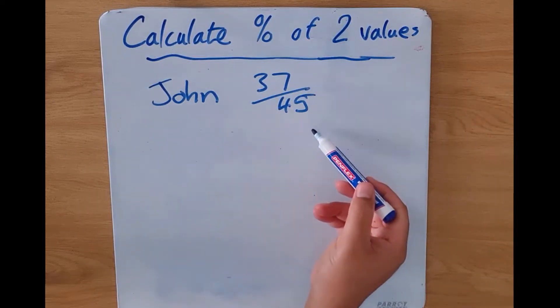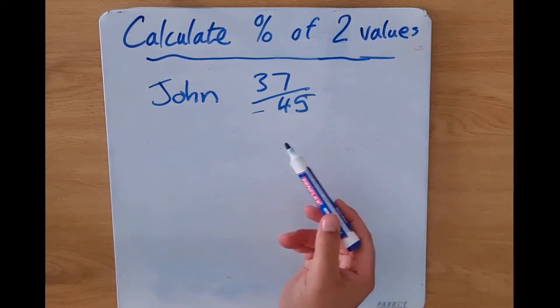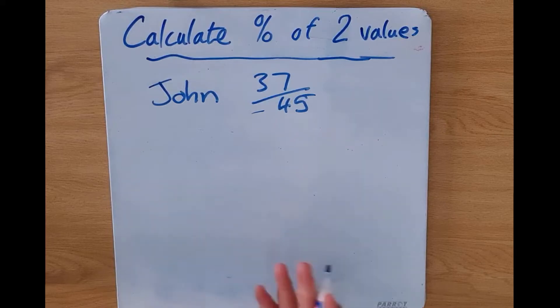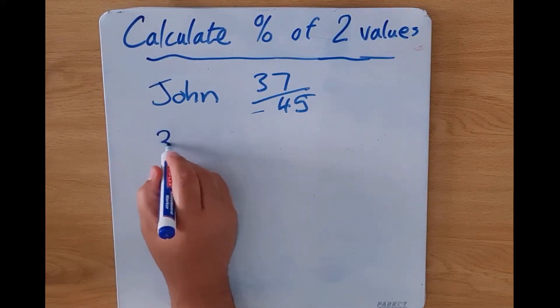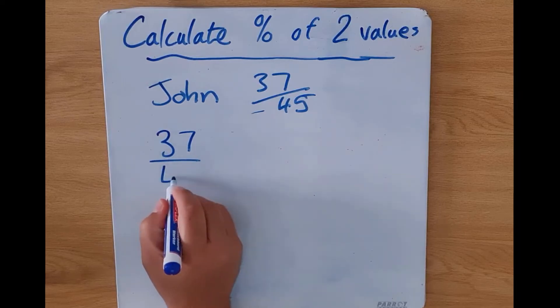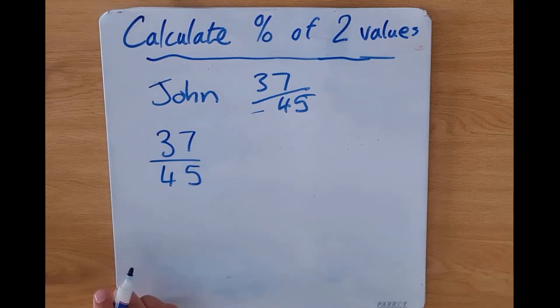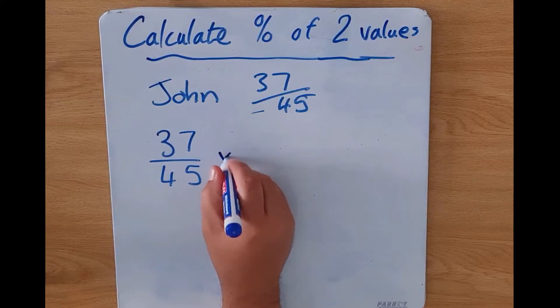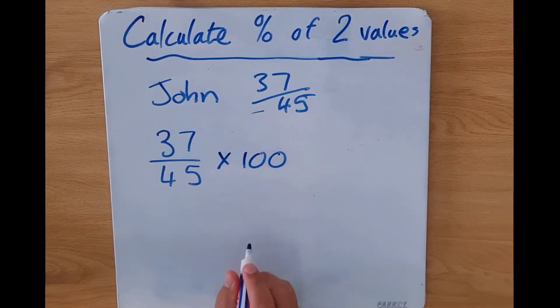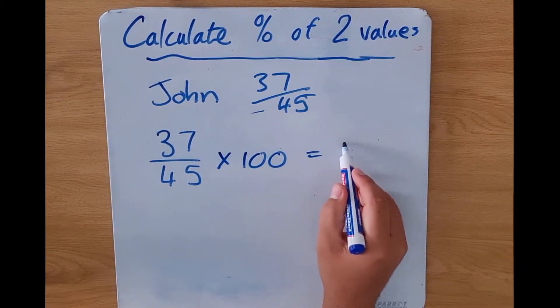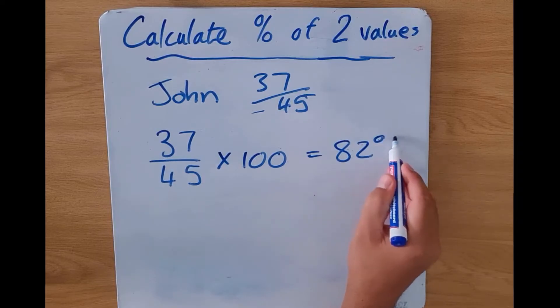Now we can see that this does not have a mark out of 100, so it doesn't look like our normal percentages. So what are we going to do? Well, we're going to take our 37 over 45, and what did we say we're going to do? We need to create a fraction and multiply the fraction by 100. So if we multiply this by 100, what we'll end up getting is 82 percent.